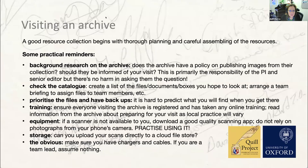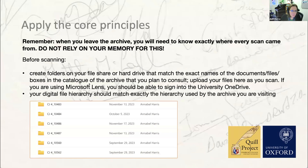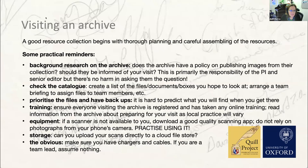We just want to make sure you have a checklist if you're going to visit an archive. First, do your background research: does the archive have a policy on publishing images from their collection? Do they need to be informed about your visit? Check the catalogue, create a list of the files, documents and boxes you hope to look at. Arrange a team meeting to assign files to team members, and prioritize the files you want to look at — have backups, as it's often hard to predict what you'll find until you get there.